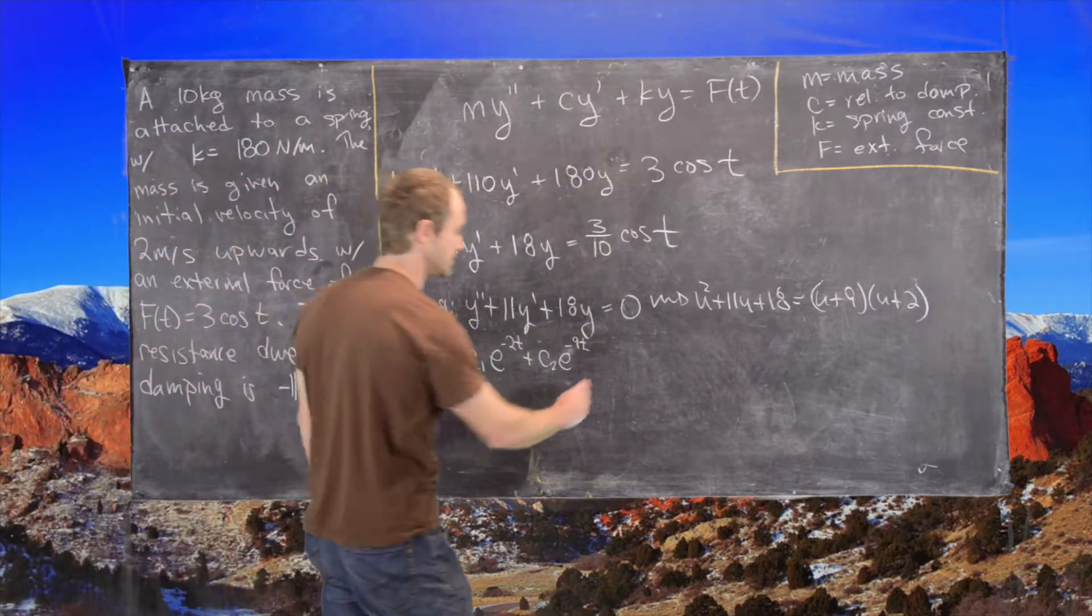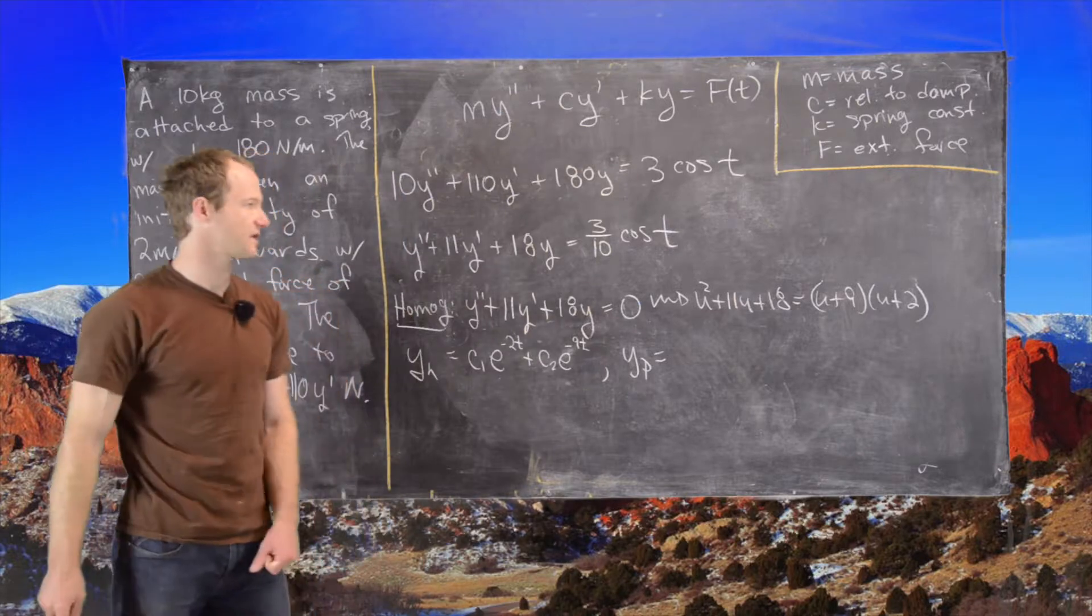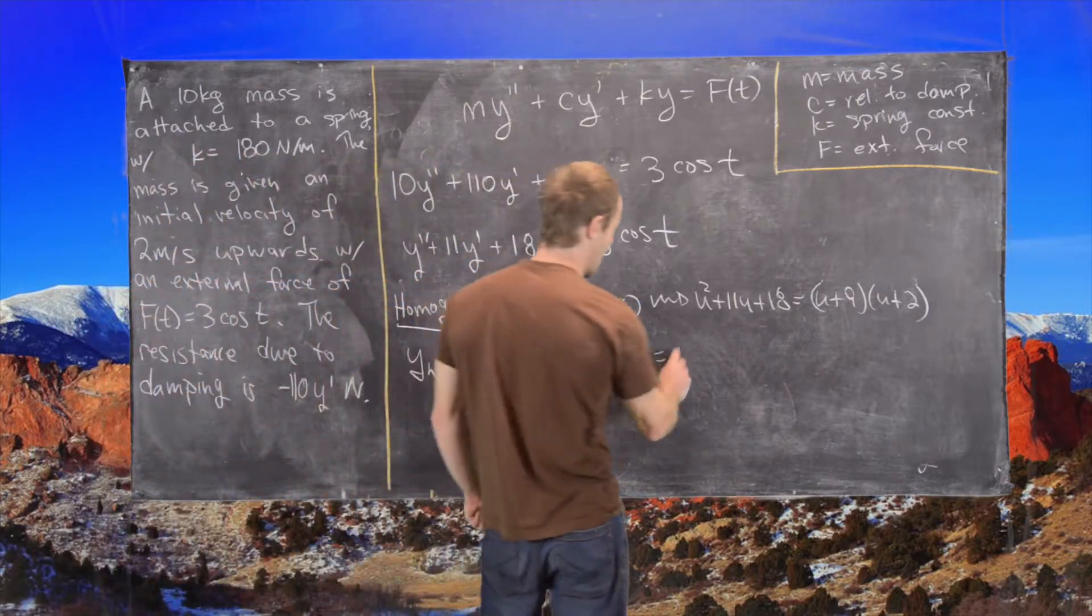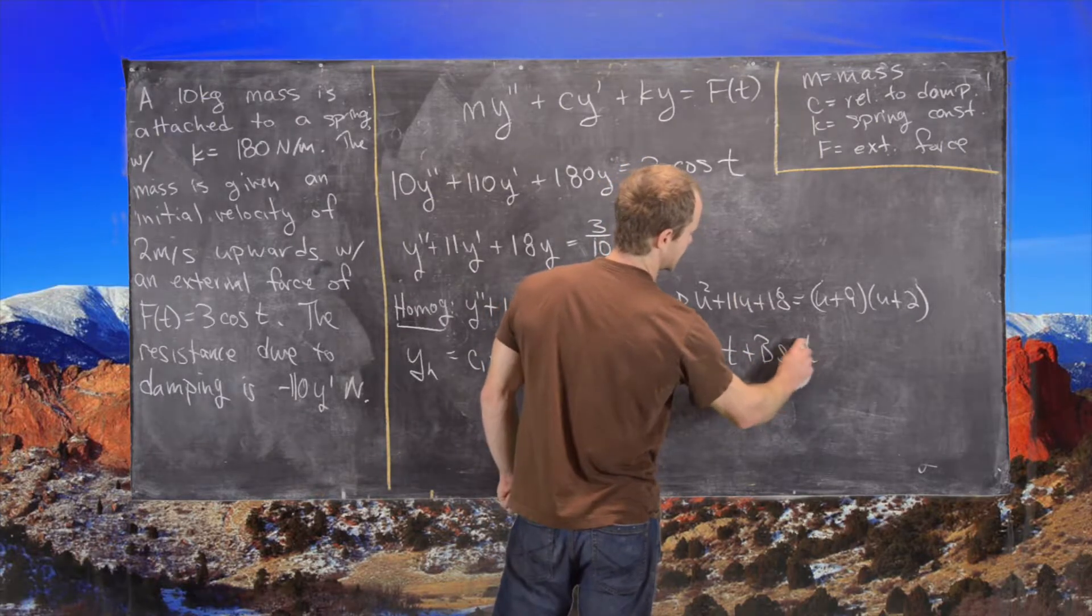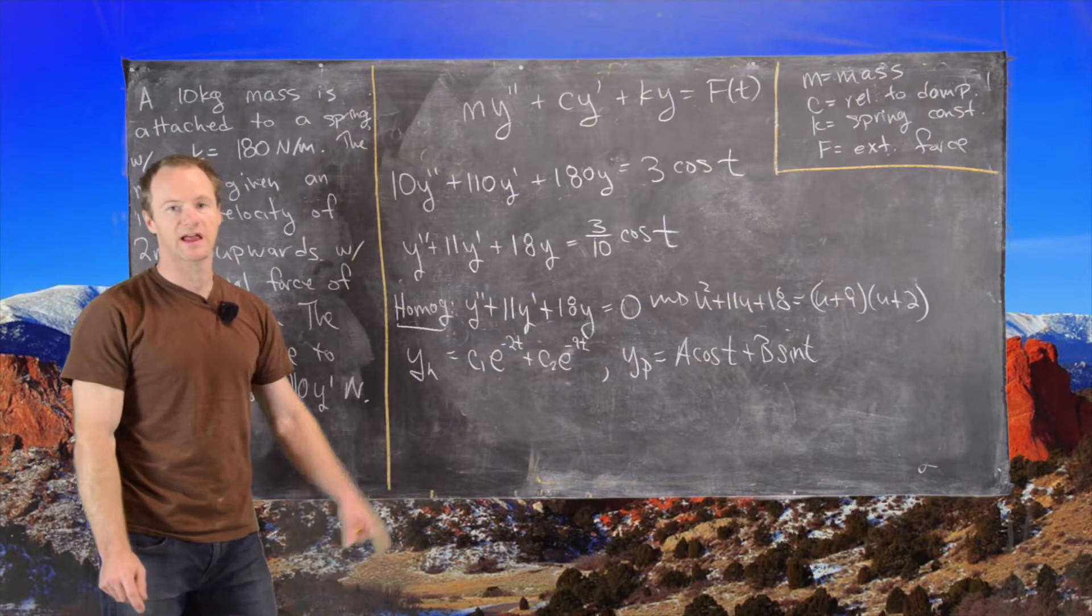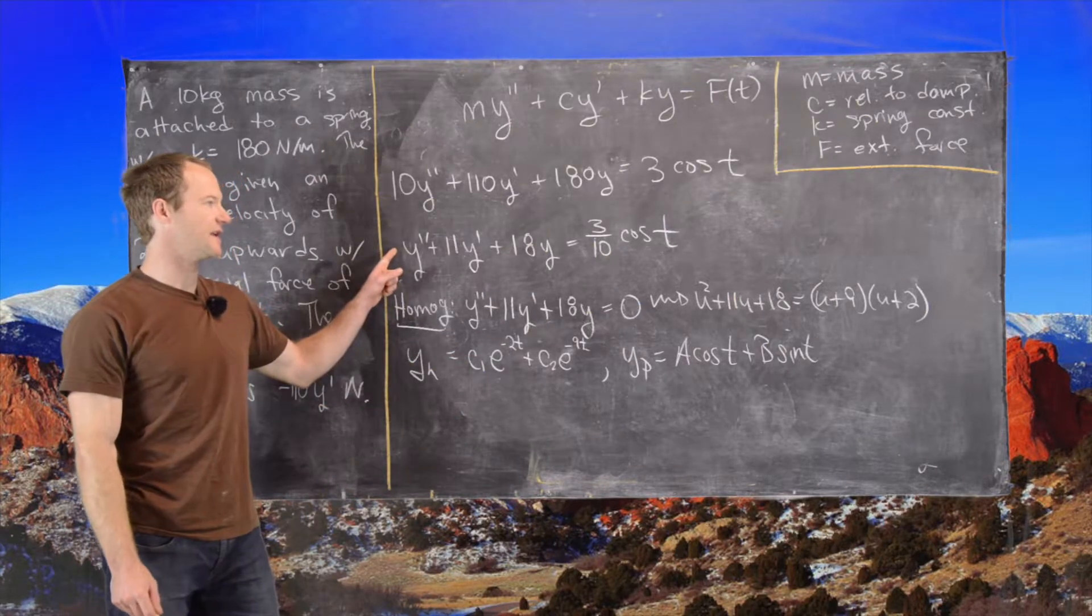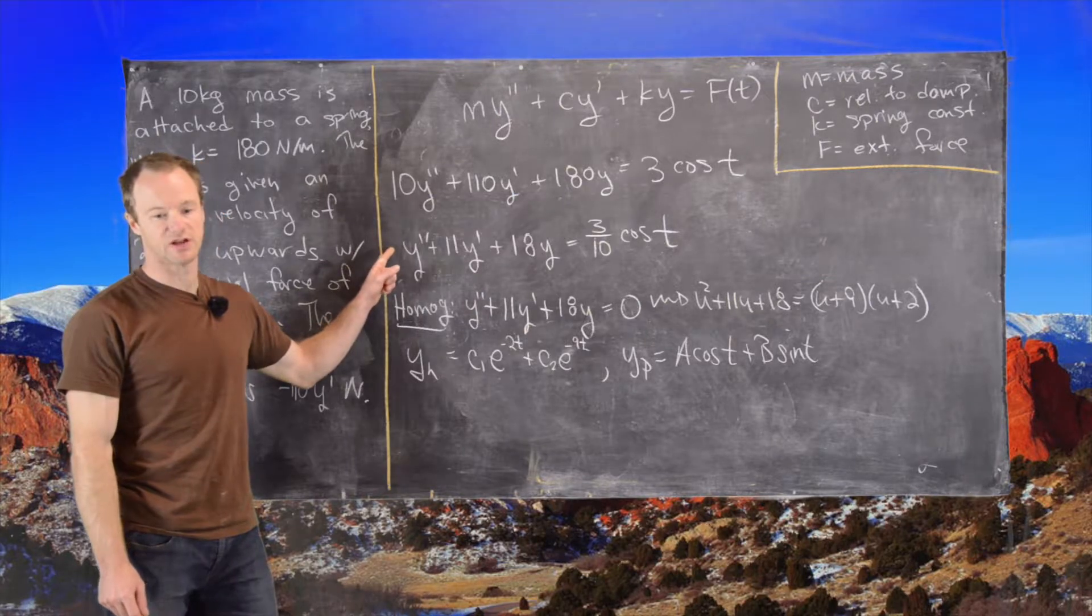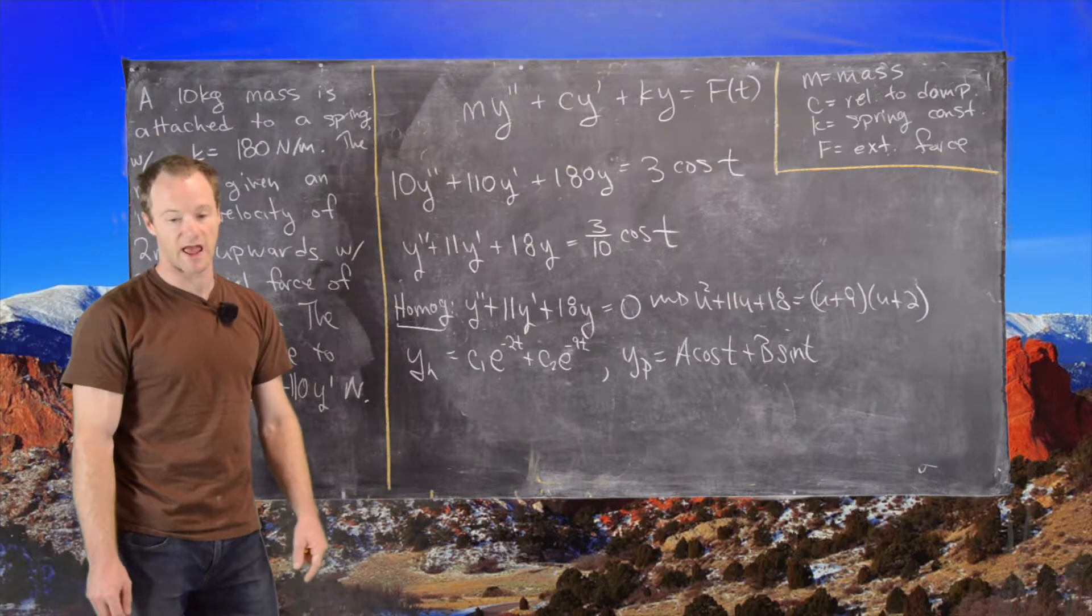And then finally, we take a guess of a particular solution to be a cosine t plus b sine t. We take the first derivative of that guess, we take the second derivative of that guess, we plug that in to the differential equation and that will give us a bunch of equations that we can use to solve for a and b.